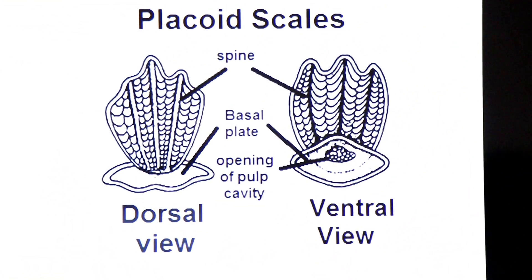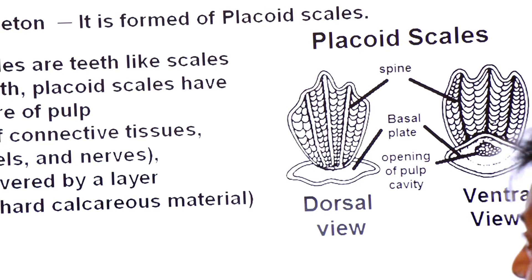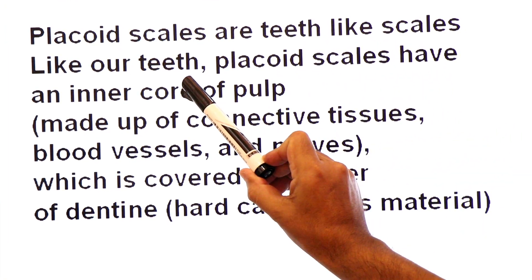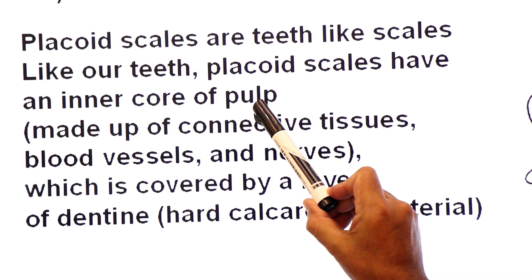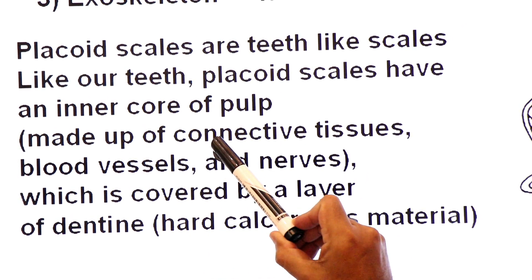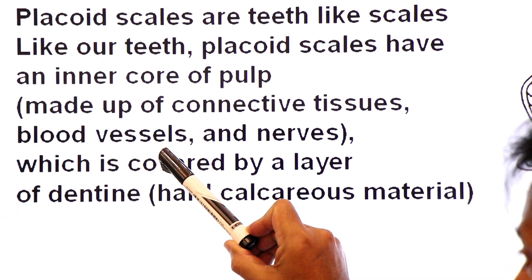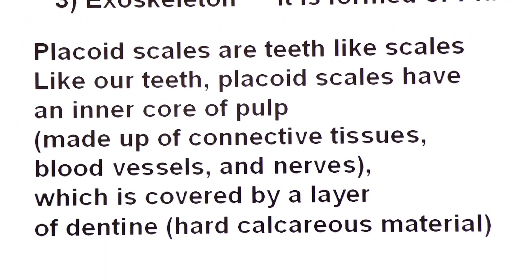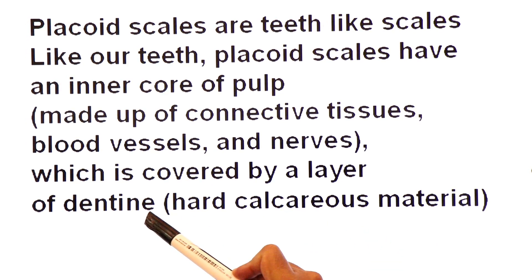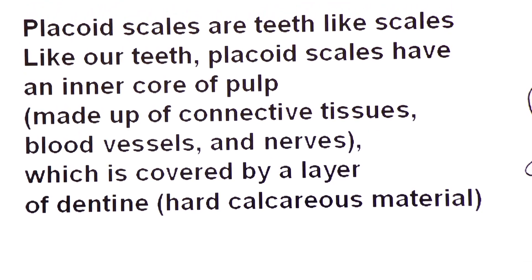All cartilage fishes are marine — they are found in seawater. Their exoskeleton is made up of scales known as placoid scales. These scales are homologous structures to vertebrate teeth. Like our teeth, placoid scales have an inner core of pulp — the soft part made up of connective tissue — with blood vessels and nerves in the pulp region. Like our teeth, the surface is covered by a layer of dentine, a hard calcareous material. So their structure is very similar to teeth.